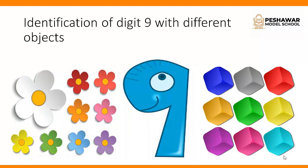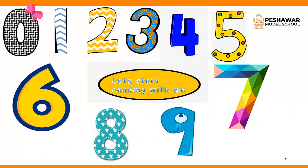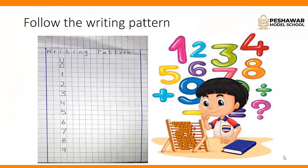Number 9 — we have 9 colorful marbles and 9 flowers which shows the value of 9. Now you have to read with me the numbers from 0 to 9. Let's start reading: 0, 1, 2, 3, 4, 5, 6, 7, 8, 9.